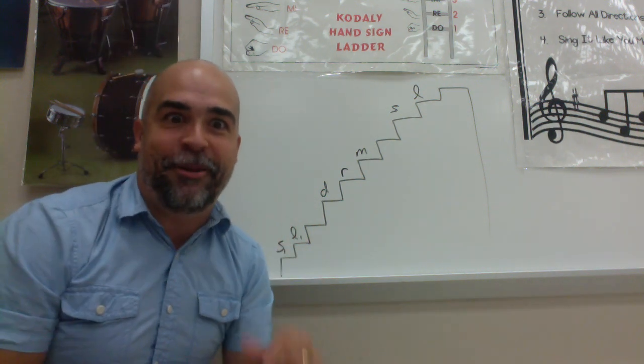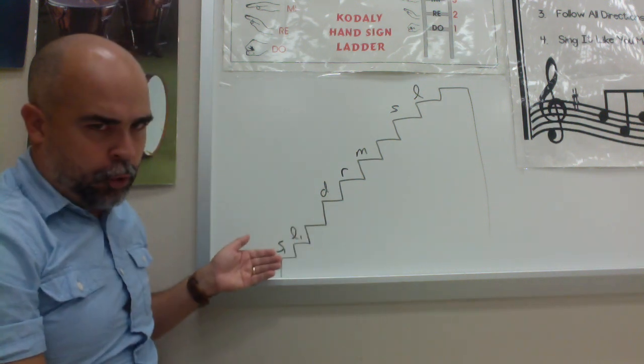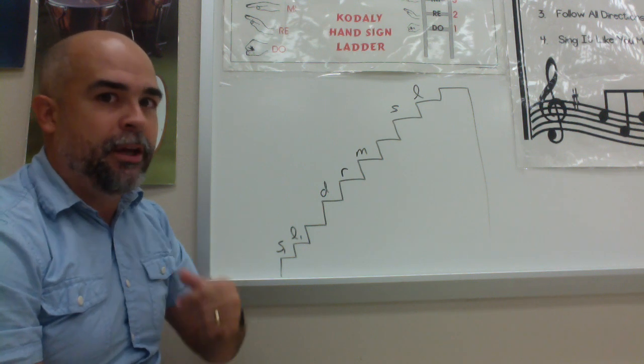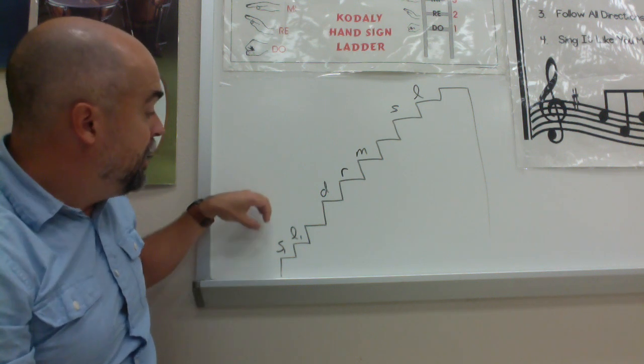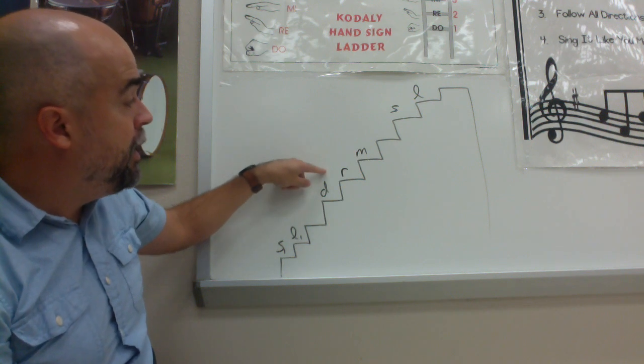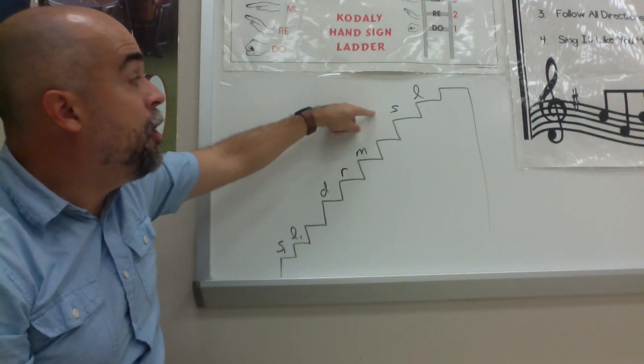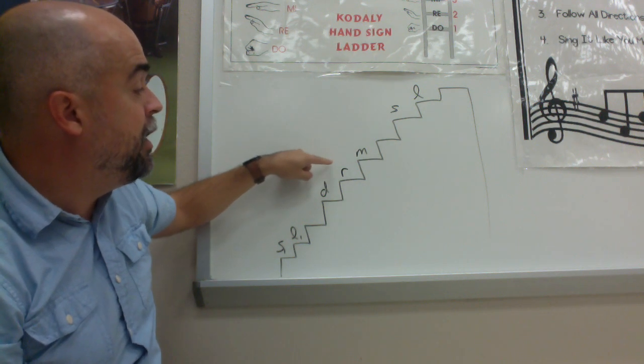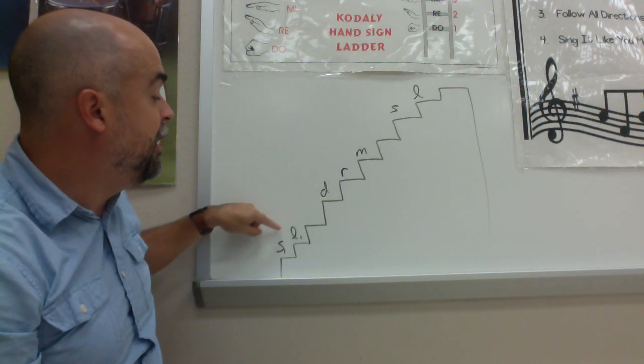Let's sing them all. Ready? From the bottom to the top. Sol. Ready? And you're down here. Sol la. Here we go. Sol la. Do. Re. Mi. Sol la. Sol. Mi. Re. Do. La. Sol.